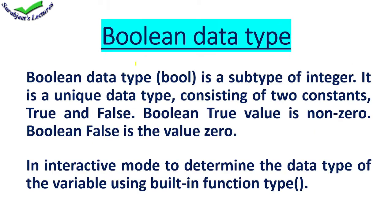The next data type is Boolean. For the Boolean data type, the keyword we use is bool. With the bool keyword you can store a Boolean value. The Boolean value is True or False — the capital T and capital F must be used. These are non-zero values. Whether you have a number value, float value, or any Boolean value, you can use the interactive mode or script mode, and you will use a type() function to check the data type of any variable.